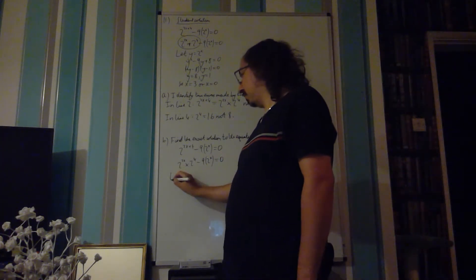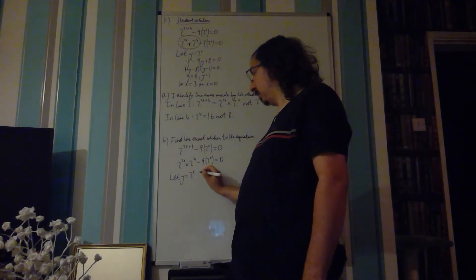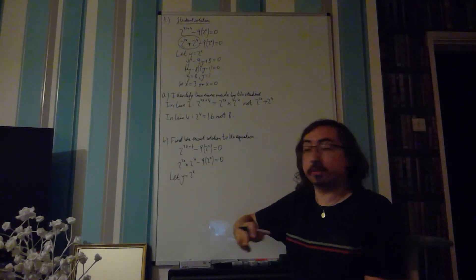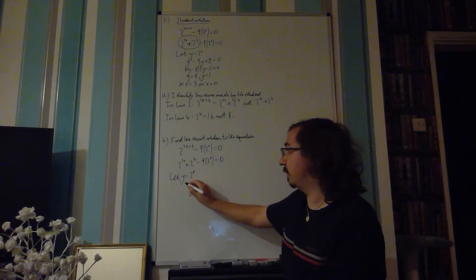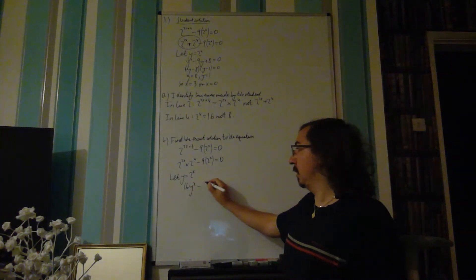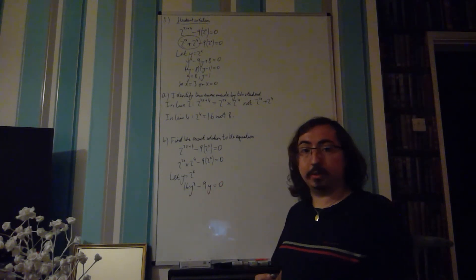If we use the method that they've got, we can say let y equal 2 to the x, that's fine. And yes, this 2 to the 2x is going to be at a y squared, but it's multiplied by this 2 to the 4, which is 16. So actually, we've got 16y squared minus 9y is equal to 0.